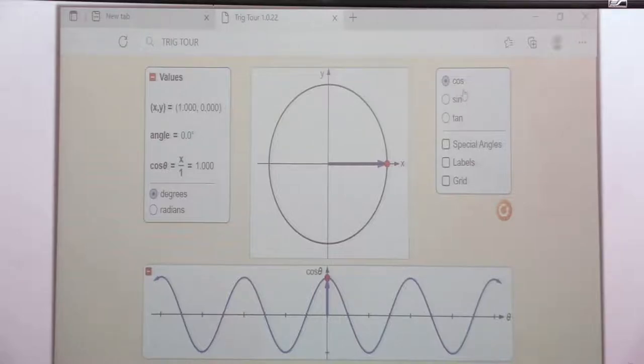Here we have the trigonometric identities: cosine, sine, tangent. We also have special angles, labels, and grid. On the other side, we have values. The values of X and Y shall also be plotted. We have the angle, the ratio. In this case, the trigonometric ratio. Each of the ratios shall be appearing here. Here we have the degrees and radians. Down here, we have the graph. The software will approach the graph of the trigonometric ratios as we shall see.